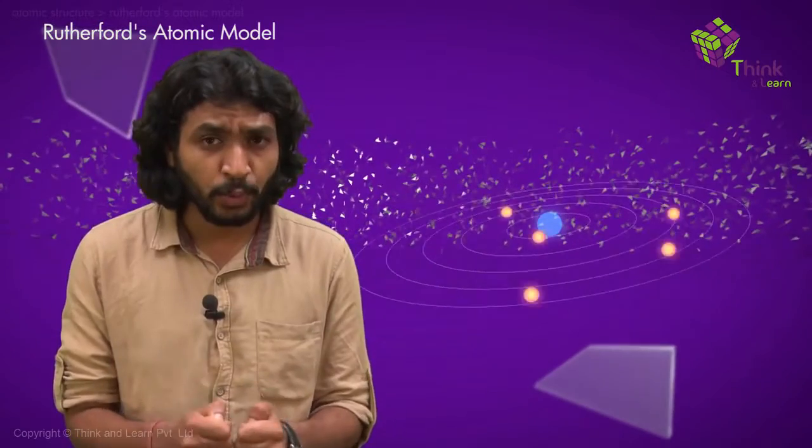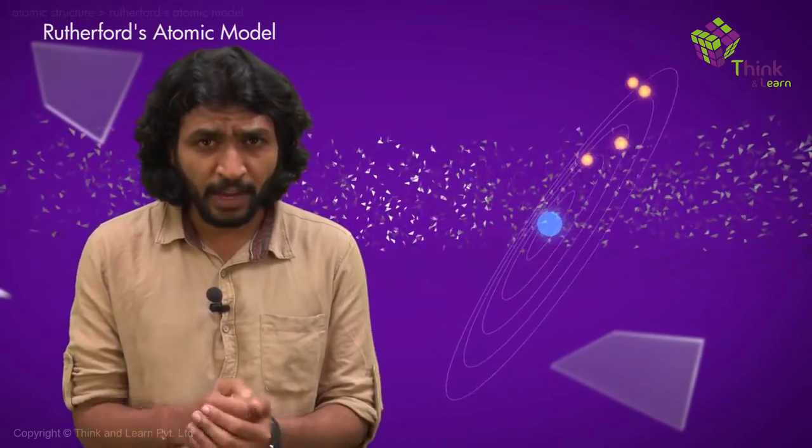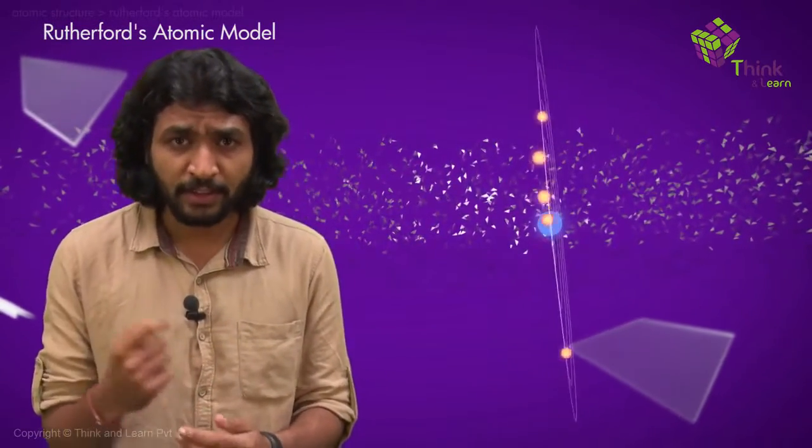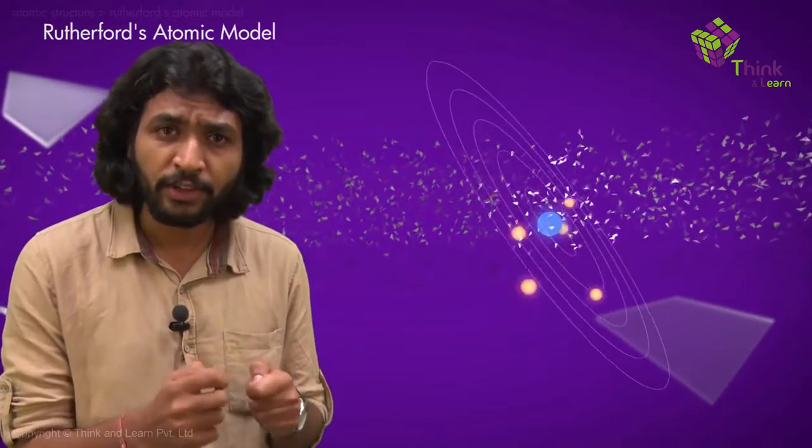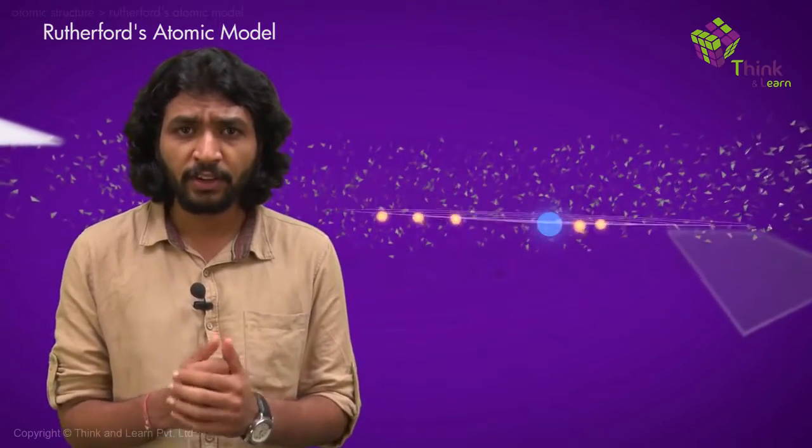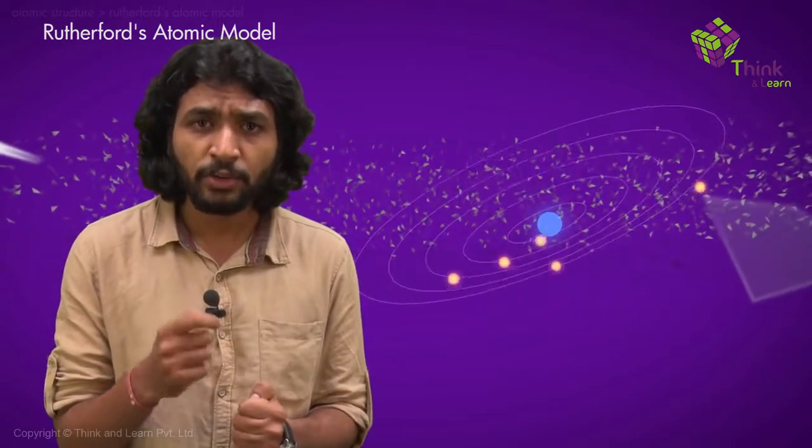Now there's some problem with Rutherford's model. James Maxwell earlier proposed that if charged particles are accelerating, they would lose energy in the form of radiation. So in our case, if electrons were accelerating around the nucleus in circular orbits, they would actually lose energy and eventually spiral into the nucleus.